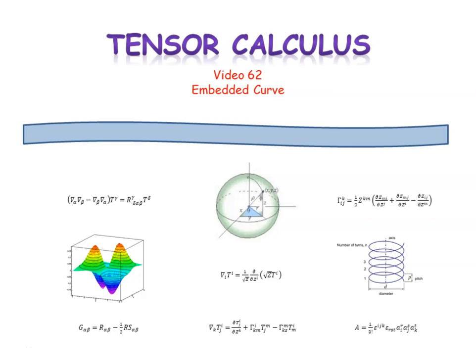Welcome to video 62 in our series on tensor calculus. In this video we're going to introduce the concept of an embedded curve, and in the process we'll derive expressions for the metric equation and the arc length in terms of surface coordinates.